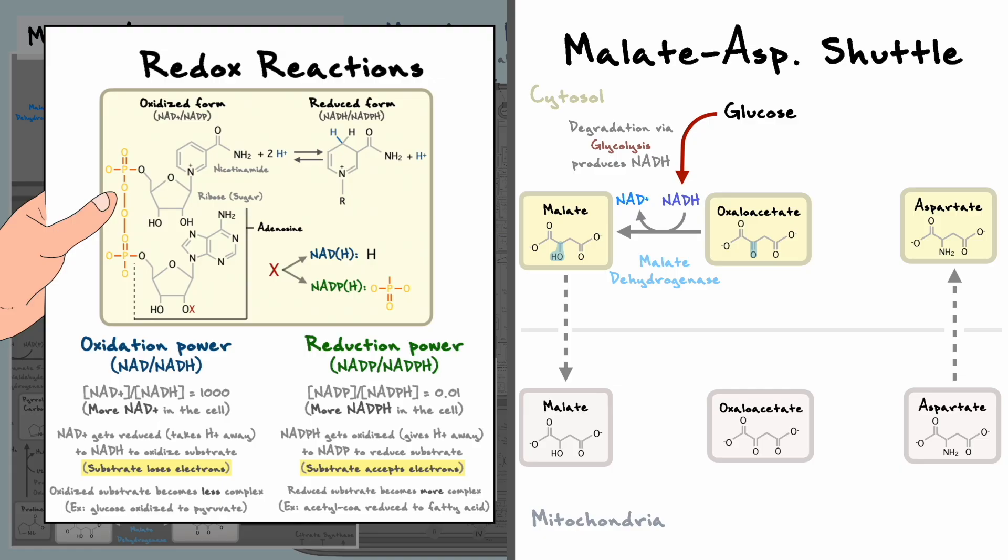After malate is produced in the cytosol, it can return to the mitochondrion where the same reaction can be performed in reverse by the same enzyme. In this reaction, which you might recall is simply the last step of the citric acid cycle, malate is oxidized to oxaloacetate and NAD+ is reduced to NADH.